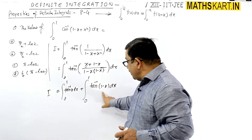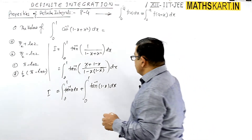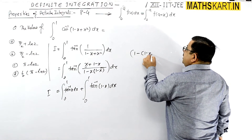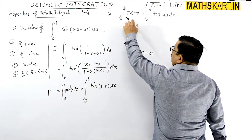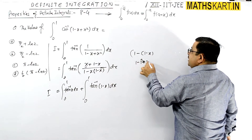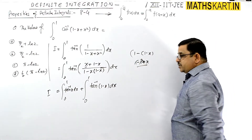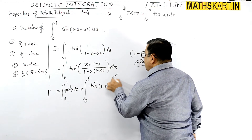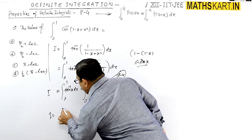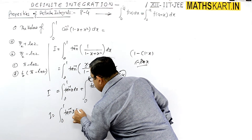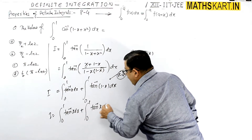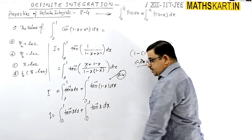Now we use Property 4 on the second integral. After applying Property 4, substituting (1 minus x) gives tan inverse x again. So the second integral also becomes the integral from 0 to 1 of tan inverse x dx, which equals i. Therefore both integrals are equal and we write 2i.